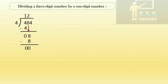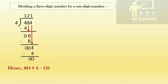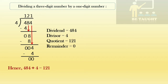We use an arrow and bring the four down. Four ones are 4, four minus four is 0. So when 484 is divided by 4, the answer is 121. The dividend is 484, the divisor is 4, the quotient is 121, and the remainder is 0.